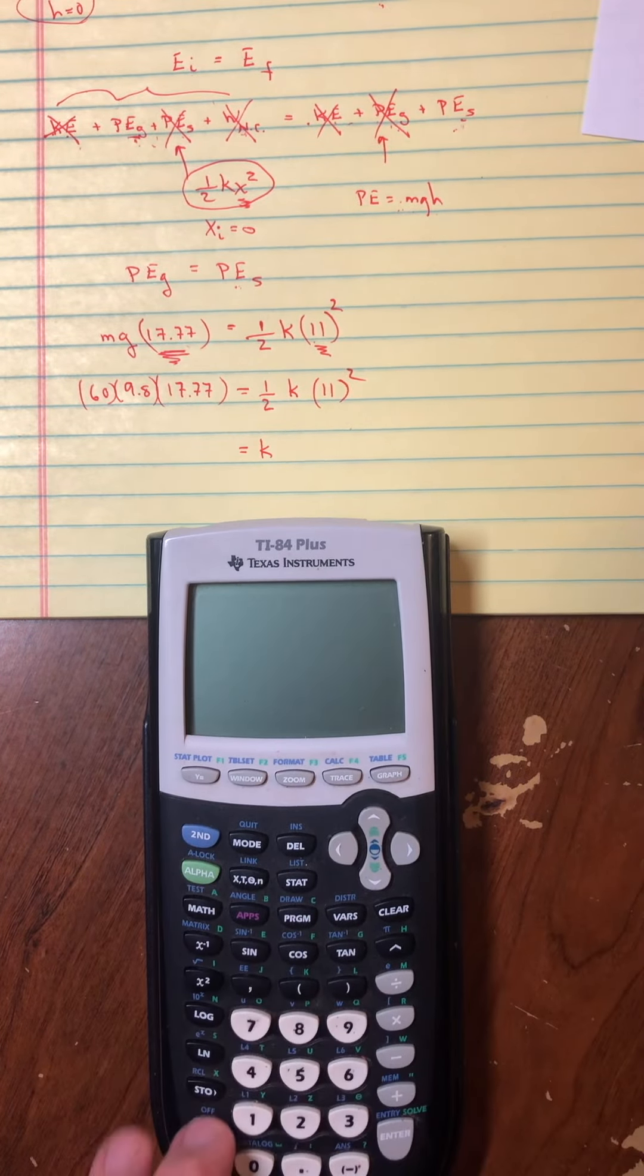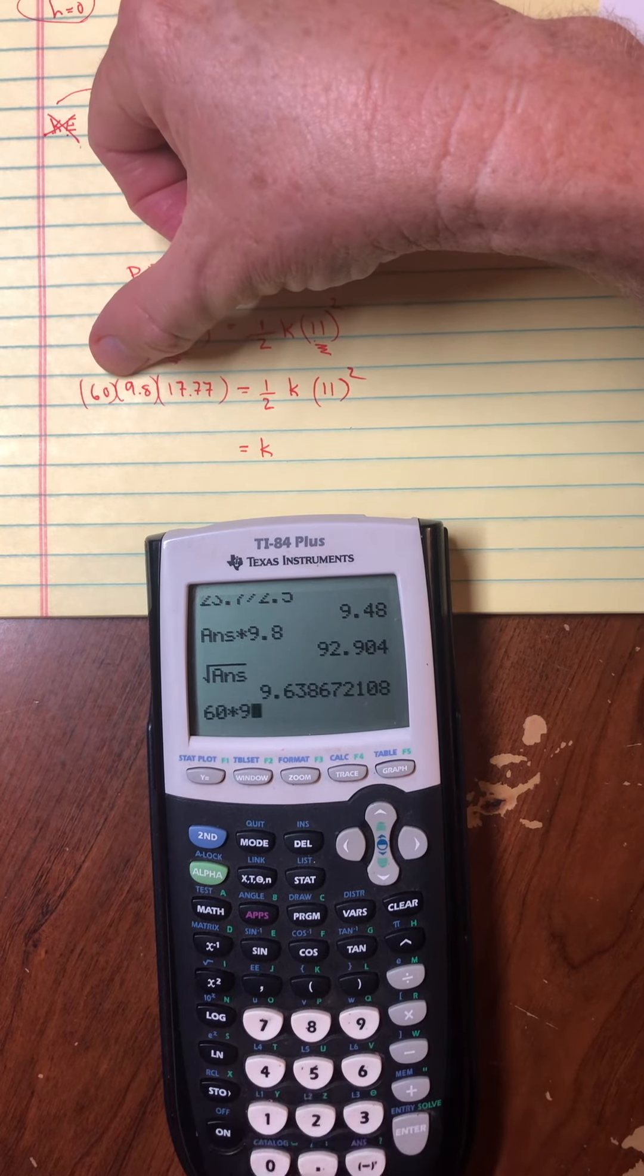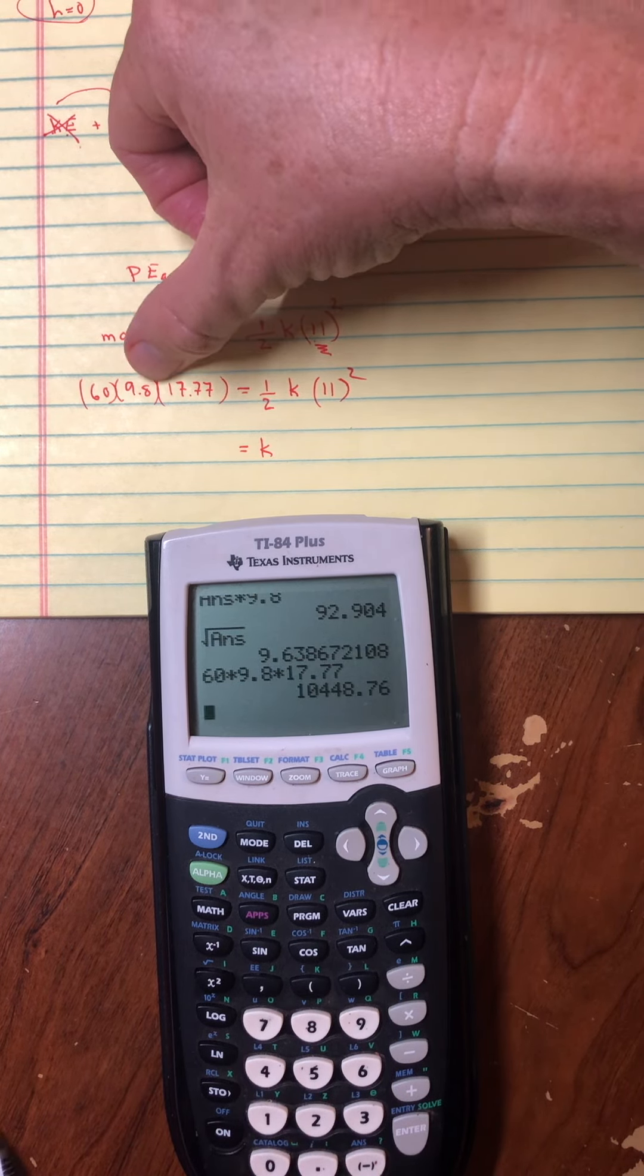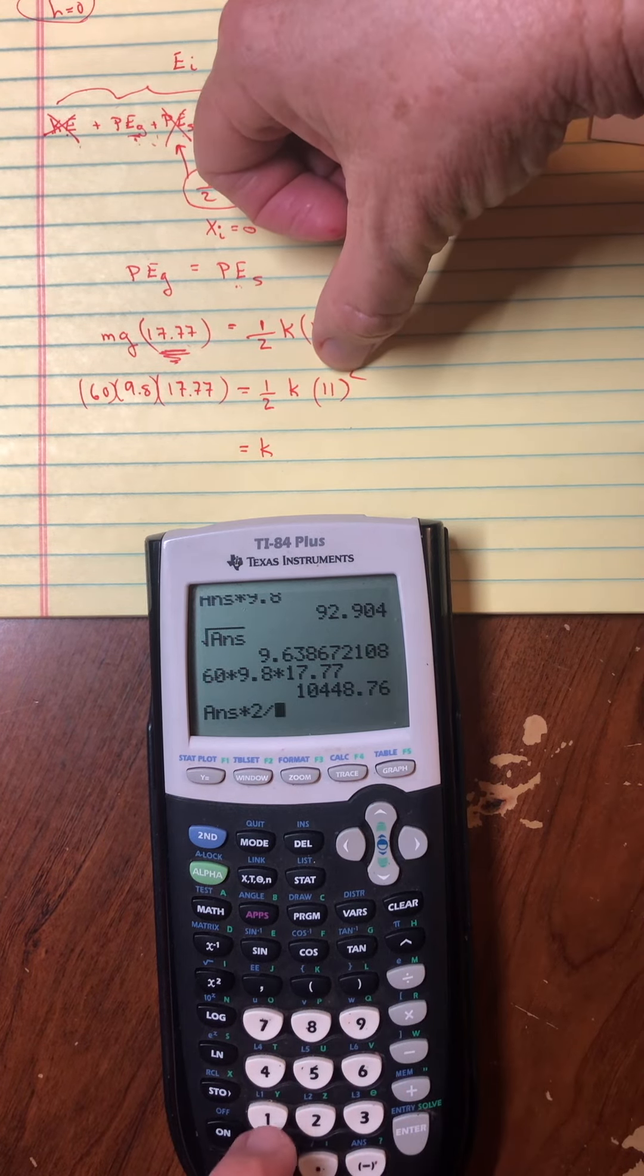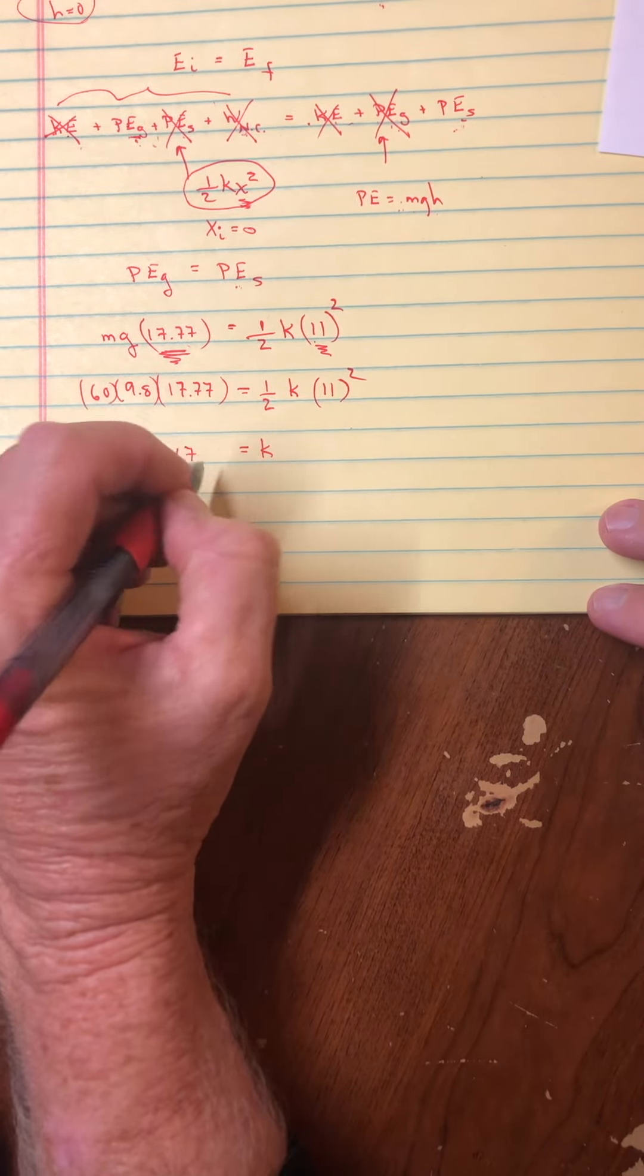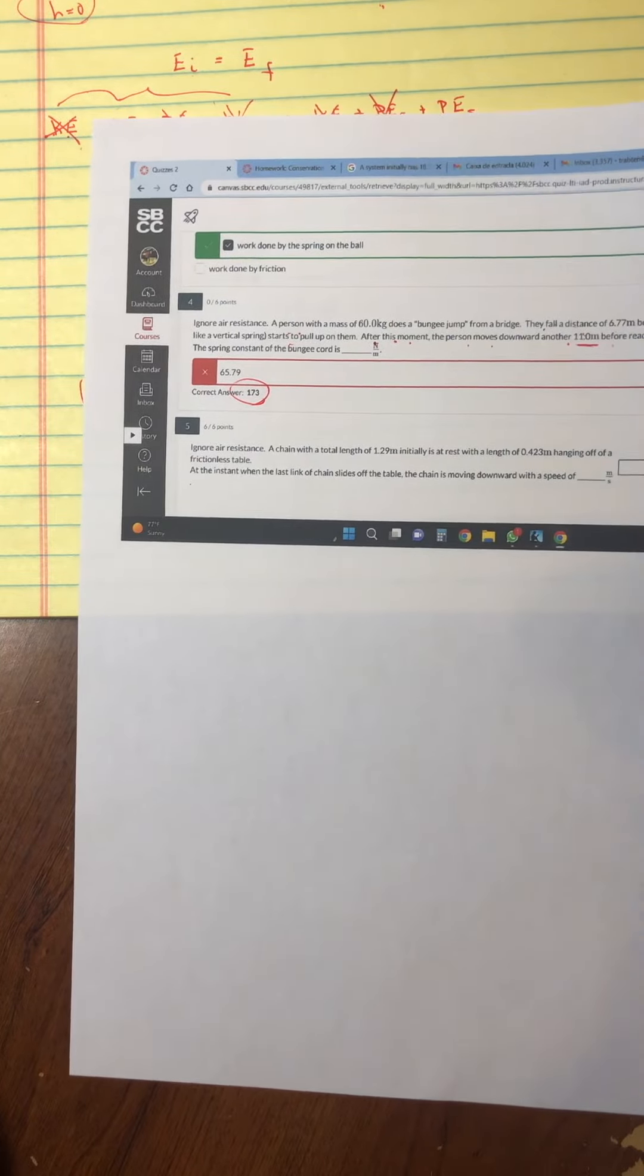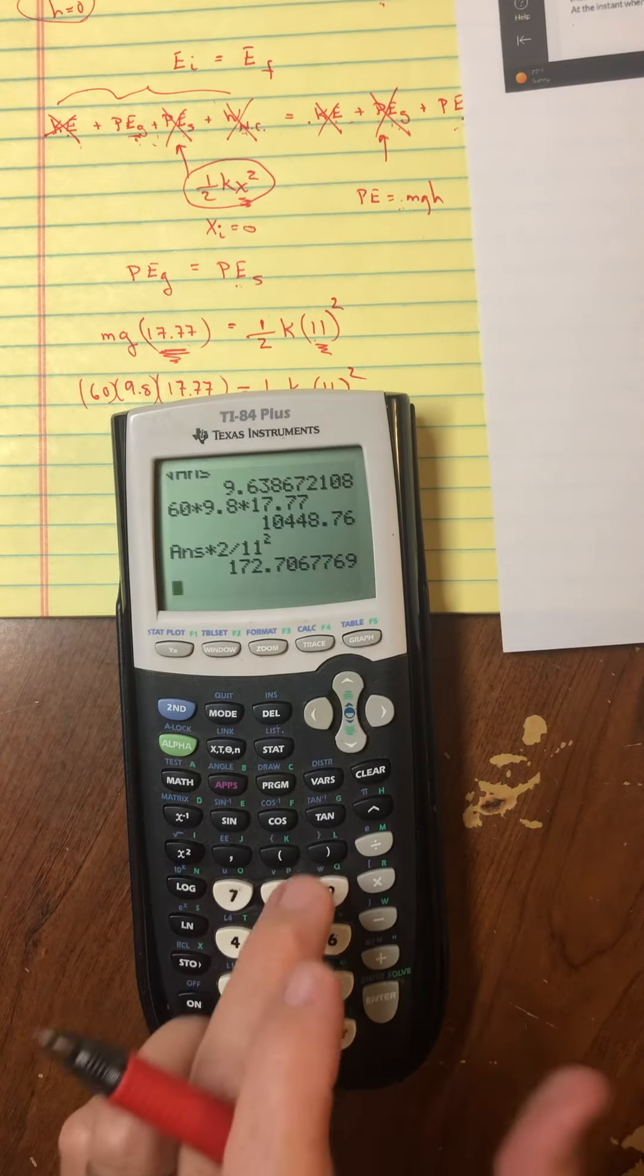All right. So here it's time to grab the calculator. So across here, I go 60 times 9.8 times 17.77. Over here, I'll go times 2. And I will divide by 11 squared. And I get a k value of 170. I'll go 3 to round it. And, yeah, sure enough, it looks like the computer has given us the same answer. Okay, good. So that should be the answer there.